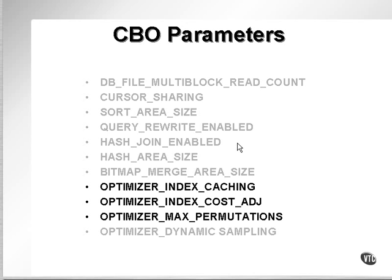Optimizer index cost adjust makes the optimizer less likely to use indexes — it becomes less index-friendly. In other words, with optimizer index cost adjust set, you are more likely to cause the optimizer to execute full table scans.